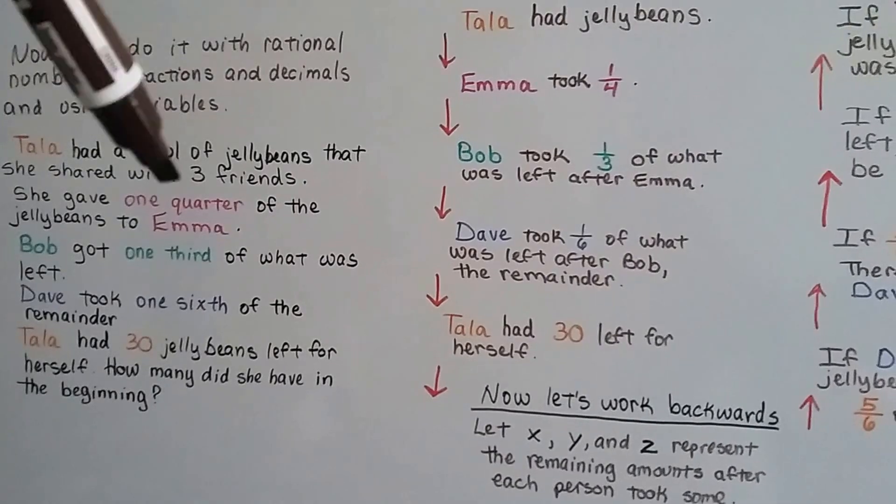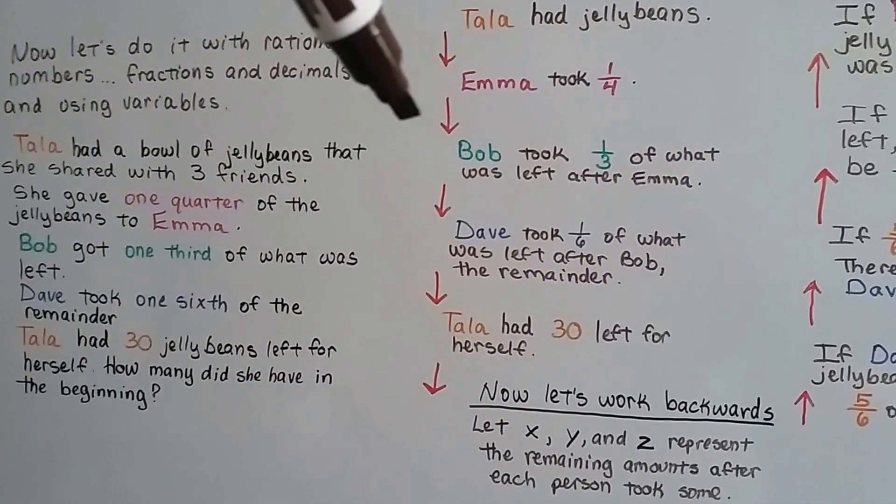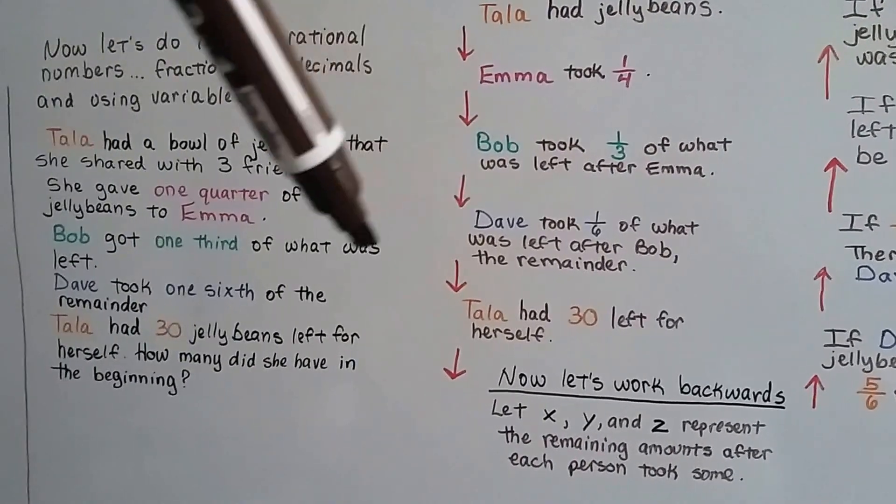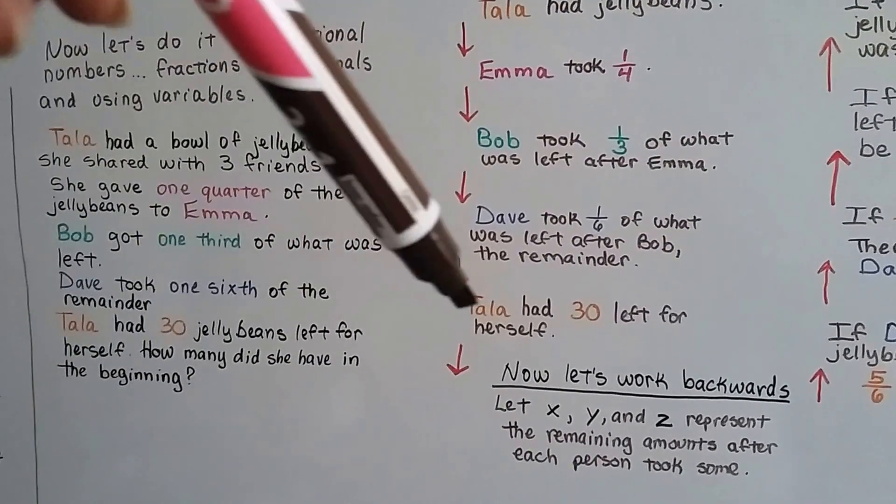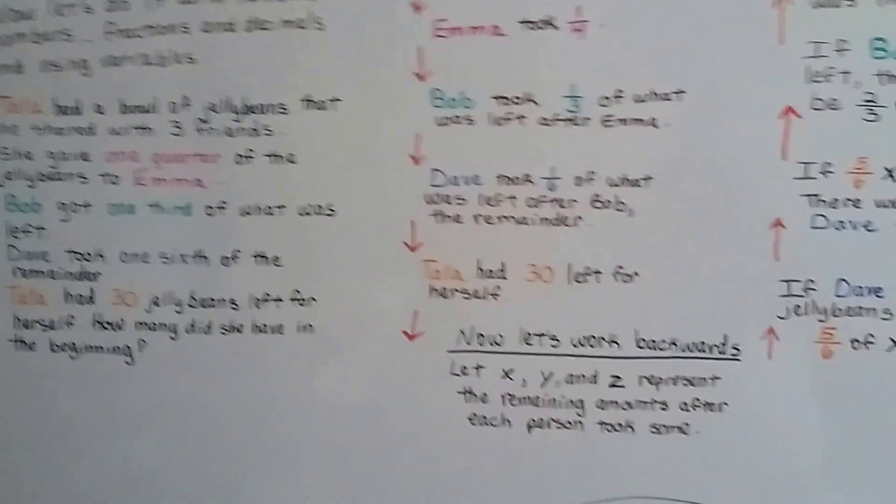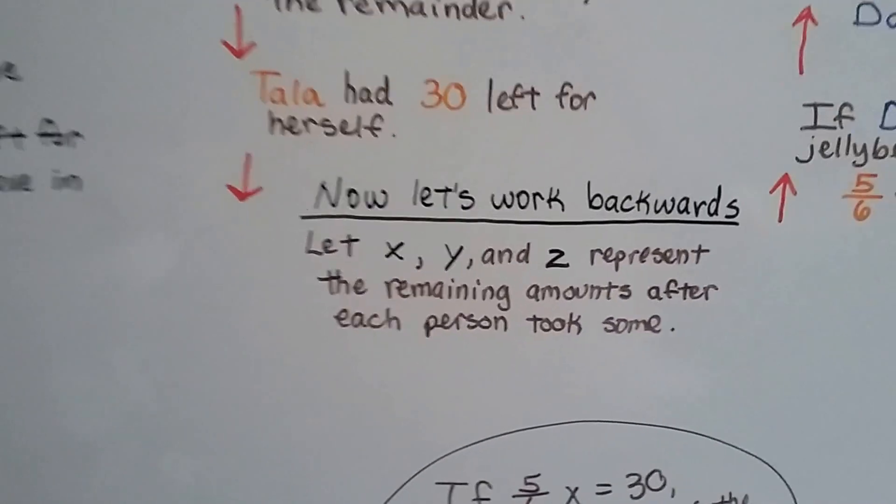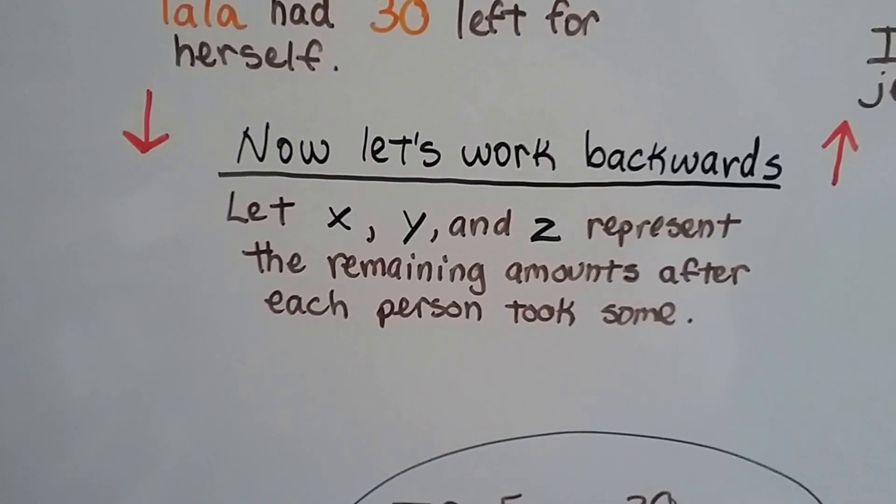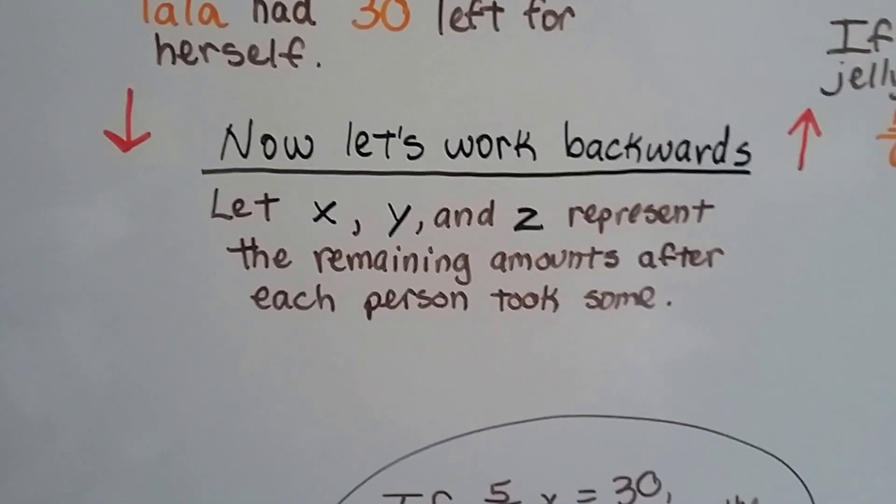We know that Tala had jelly beans. We know Emma took one-fourth. Bob took one-third of what was left after Emma, and Dave took one-sixth of what was left after Bob, which left Tala with thirty. So now let's work backwards. Let's let X, Y, and Z represent the remaining amounts after each person took some.